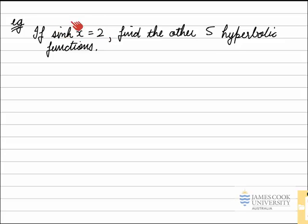Given one hyperbolic function, we can use the unit hyperbola identity to find the other cosh x in this case, and so we'll start with that.